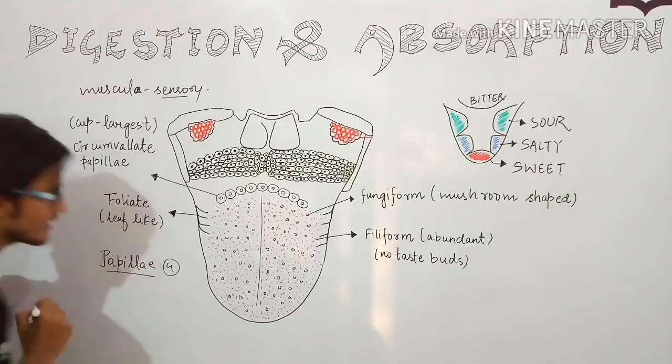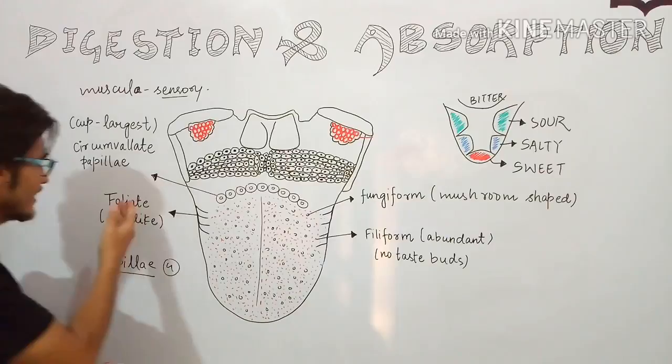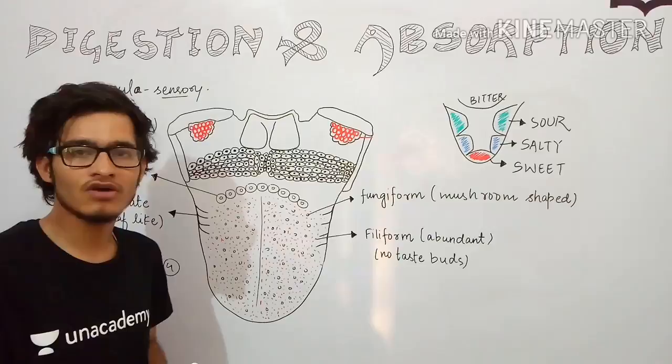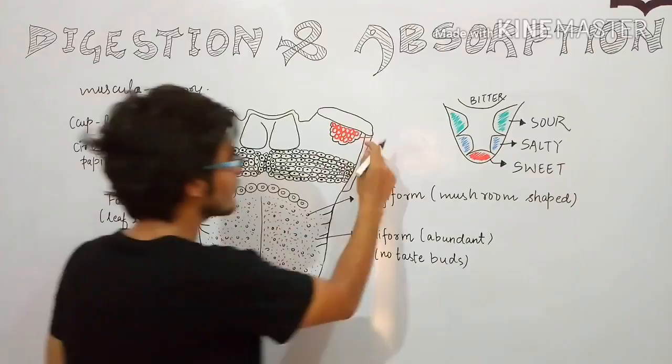What are the four types of papillae? There is fungiform papillae, there is filiform papillae, there is foliate papillae, and circumvallate papillae. We will talk about different regions of the tongue as well as the different types of papillae present in the tongue.